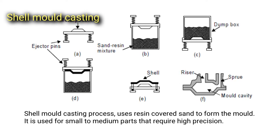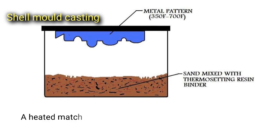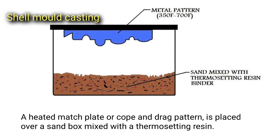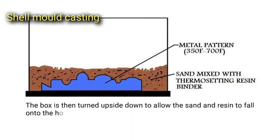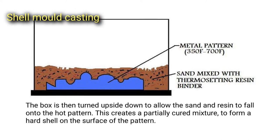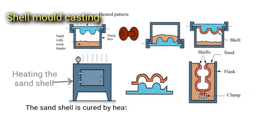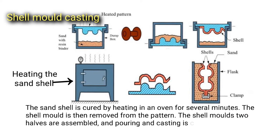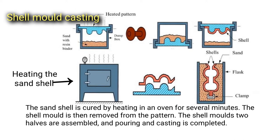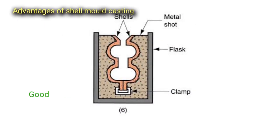Shell mold casting uses resin-covered sand to form the mold and is used for small to medium parts that require high precision. A heated match plate or cope and drag pattern is placed over a sandbox mixed with thermosetting resins. The box is turned upside down to allow the sand and resin to fall onto the hot pattern, creating a partially cured mixture to form a hard shell on the surface. The sand shell is cured by heating in an oven for several minutes, then removed from the pattern. The shell mold's two halves are assembled and pouring and casting is completed.